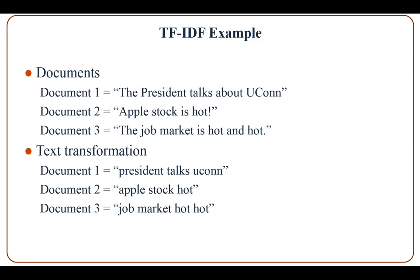stores the string 'the job market is hot and hot'. After the text transformation, in Document 1 we have 'president talks Yukon', in Document 2 we have 'Apple stock hot', and in Document 3 we have 'job market hot hot'.